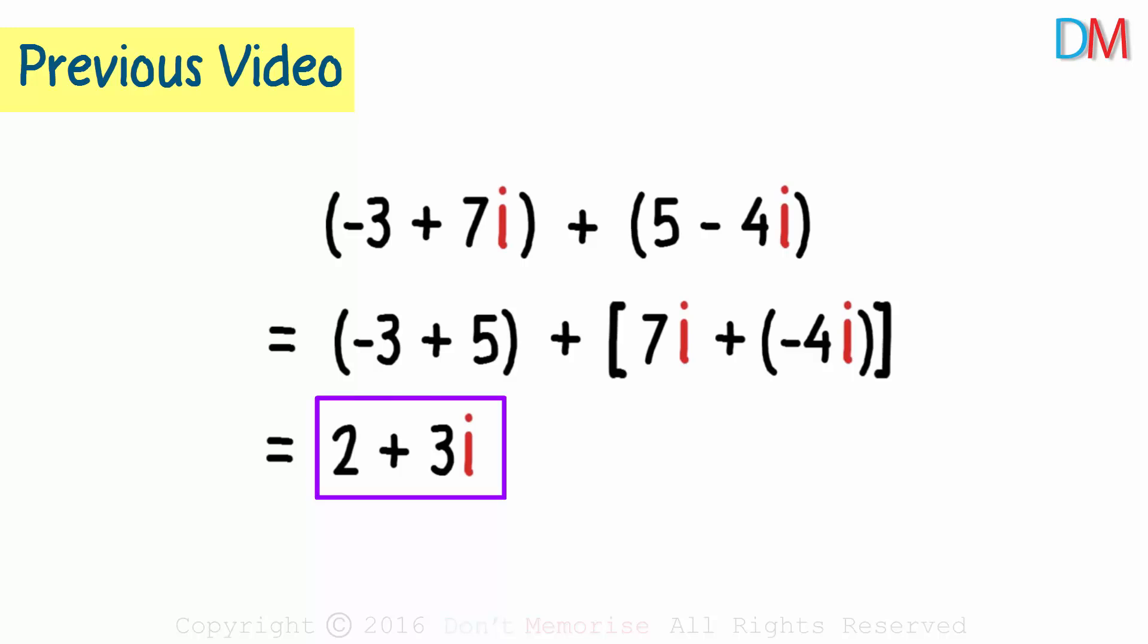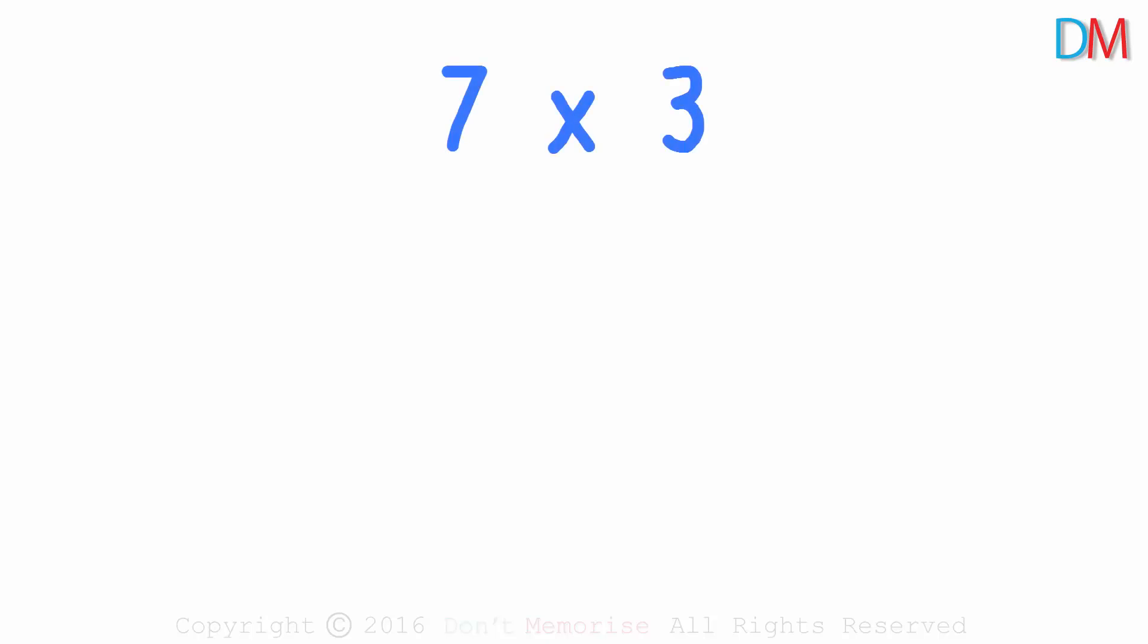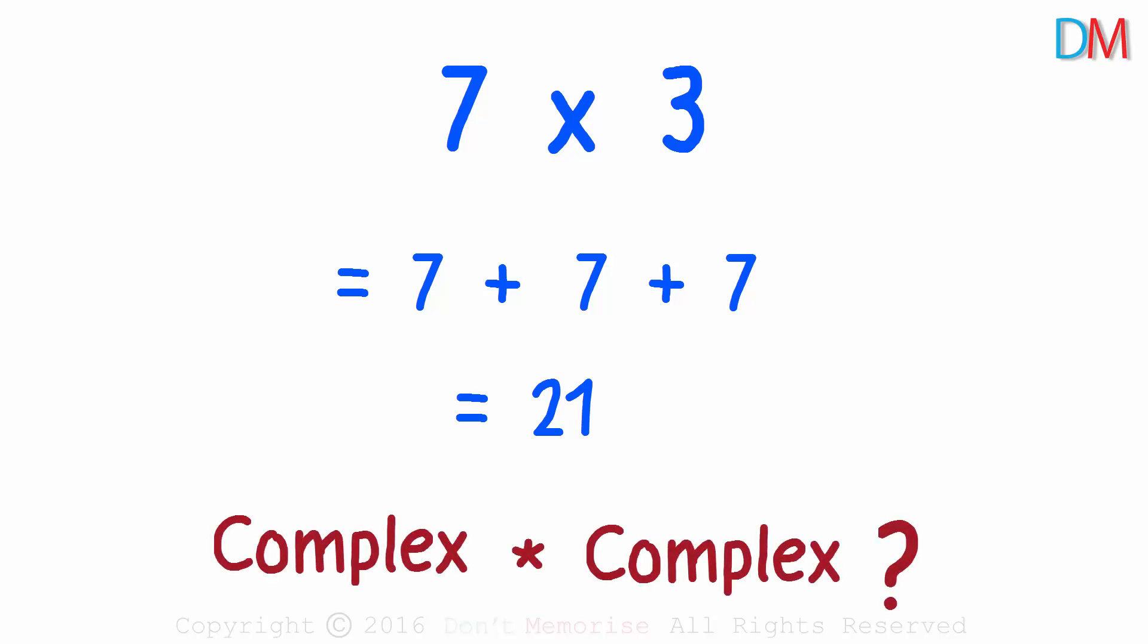We also note that multiplication of two numbers, say 7 times 3, is just adding 7 thrice. That is 7 plus 7 plus 7 which equals 21. Is it that easy in complex numbers? How can two complex numbers be multiplied?